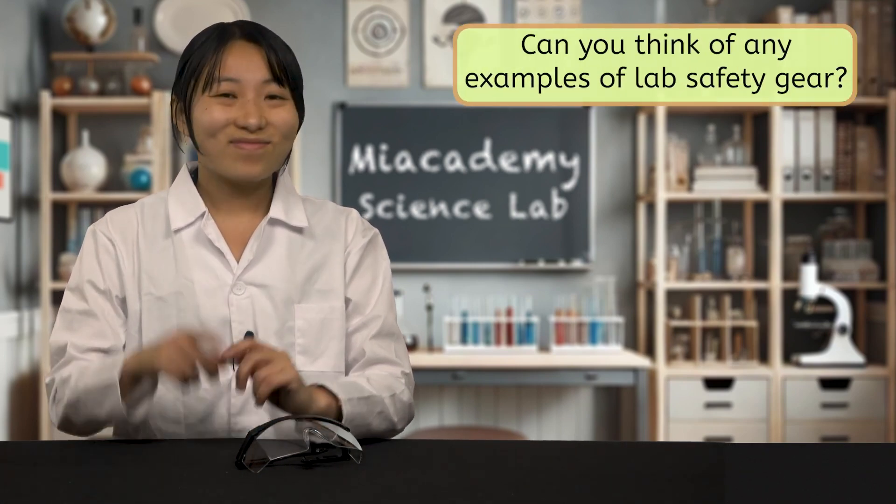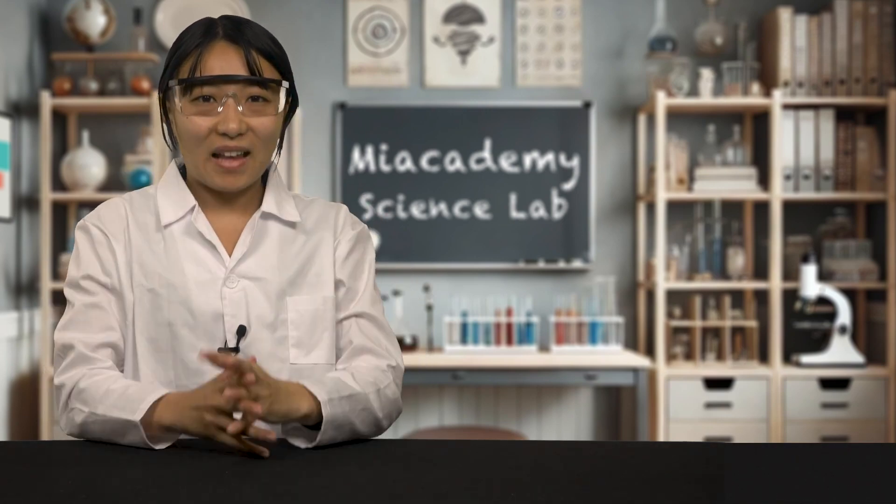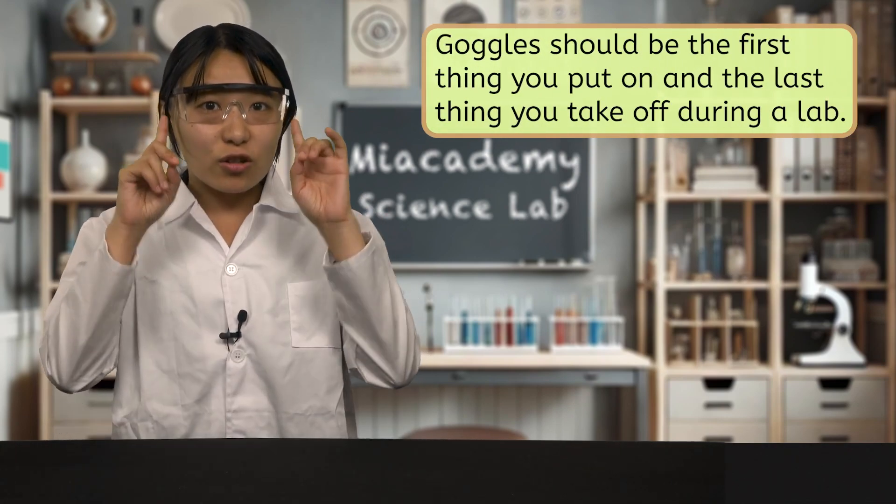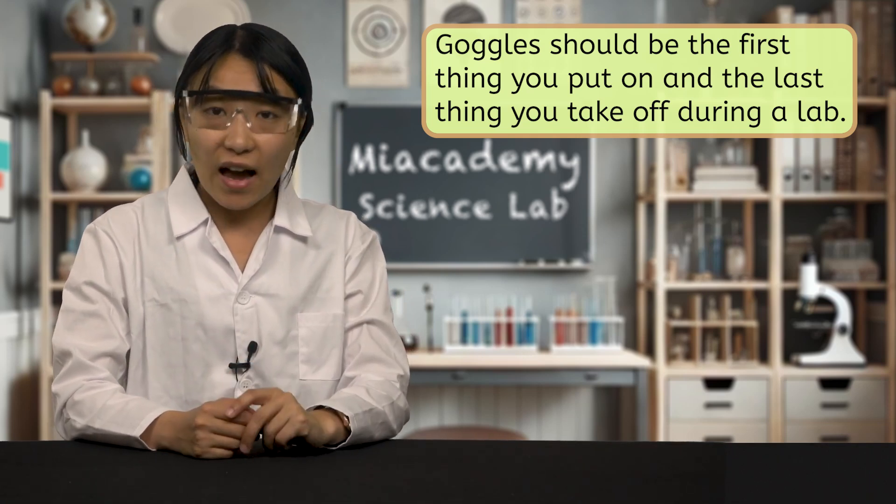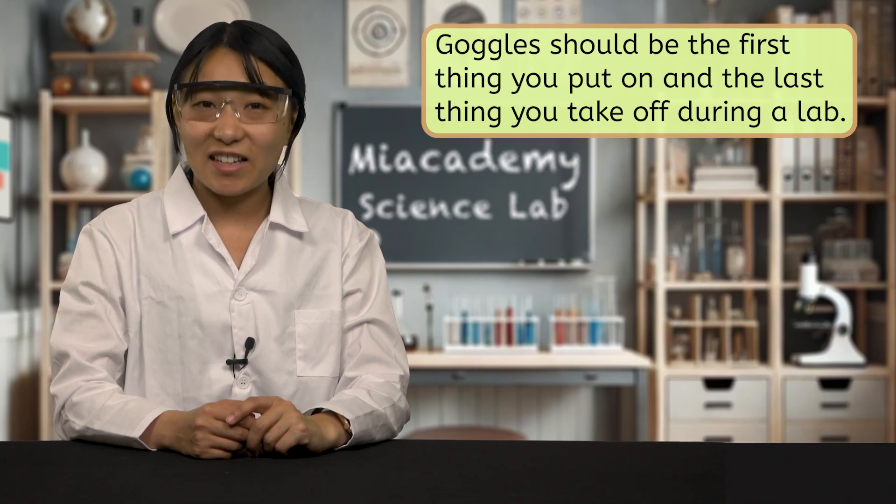The second P is Protect. This is where you gear up, just like you'd wear pads or a helmet during a football game. Protective equipment in a lab keeps you safe from spills, splashes, and other surprises. Can you think of any examples of lab safety gear? Start with your eyes. Goggles are a must to protect them from any chemicals or flying bits. In any science lab investigation, goggles should be the very first piece of gear you put on and the very last thing you take off after you've finished the lab and clean up.